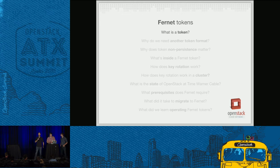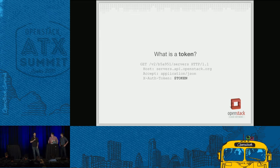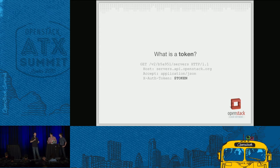So what is a token? If you interact with OpenStack in any means whatsoever — if you use Horizon, OpenStack Client, Keystone Client, Nova Client, or anything — you're always going to start by authenticating with Keystone. Keystone's going to give you back a token, and then every interaction with OpenStack beyond that point is going to involve that token. This would be an example request to Nova.